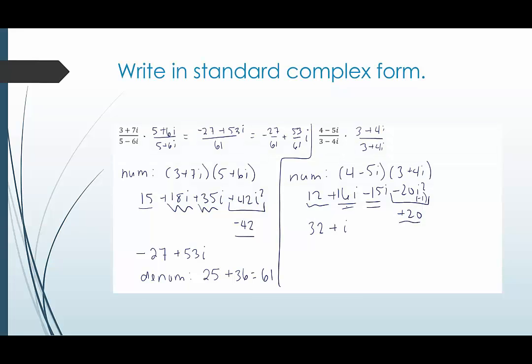Okay so this we end up getting 32 plus i. And then in the denominator it would be the square of the first. That would be 9 plus the square of the real part of the second which would be 16. 9 plus 16 is 25. So this would be over 25.